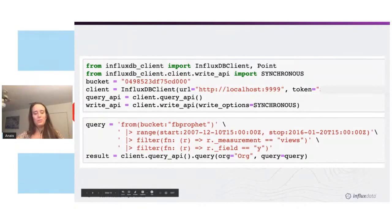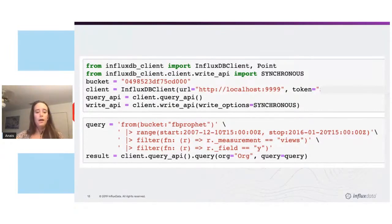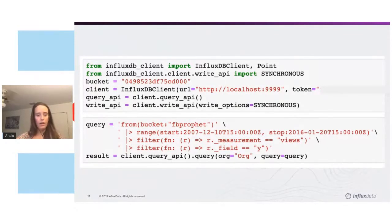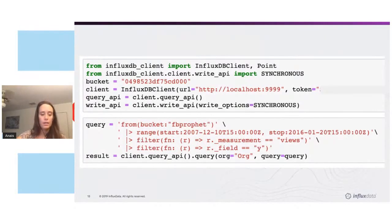The very first step to use the InfluxDB Python client is to import our packages. We will import the InfluxDB client, make sure we have pandas imported, and specify the write option for the client. In this case I'll be making writes synchronously, but you can also make asynchronous writes. After storing authorization parameters in a variable called token, and also having the URL and bucket ID, we can simply instantiate the client.